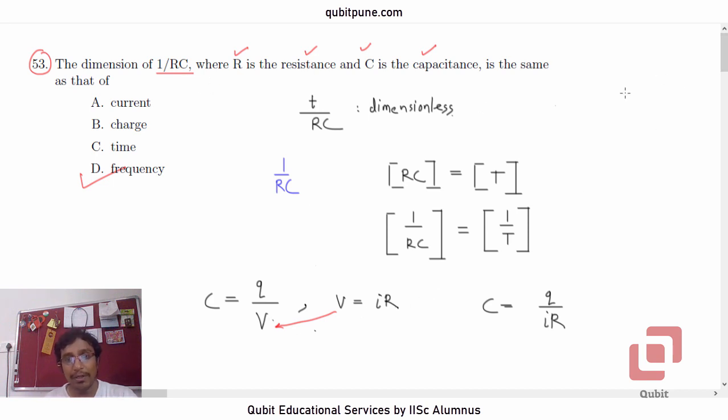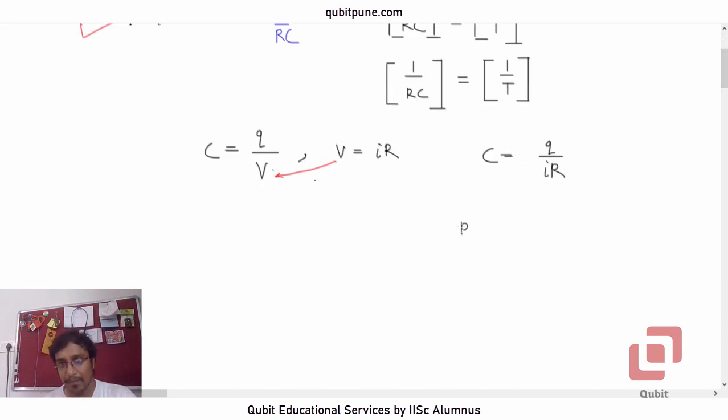Now what do we want? We want RC together. So that is Q by I. Now, what is current? Current is the rate of flow of charge, it's Q by T. So this is T. So 1 upon RC will be 1 upon T.